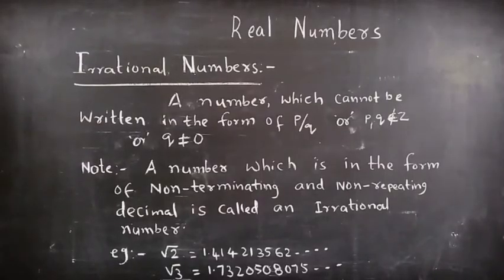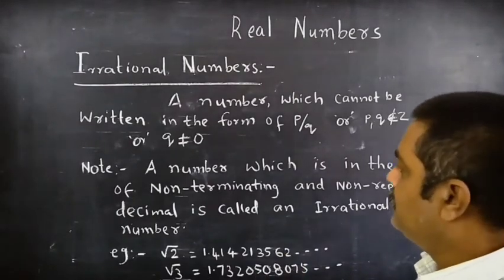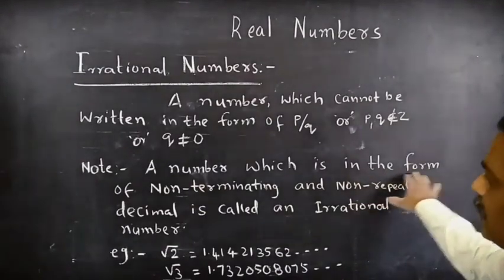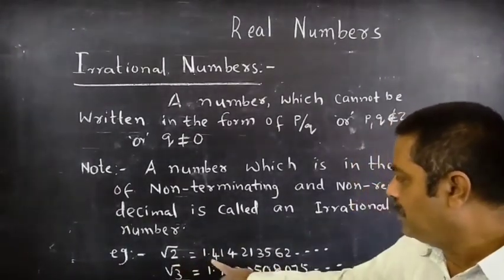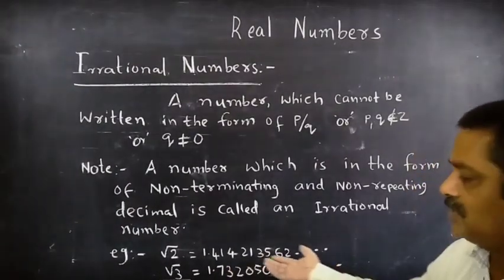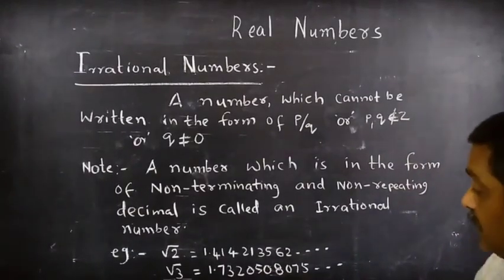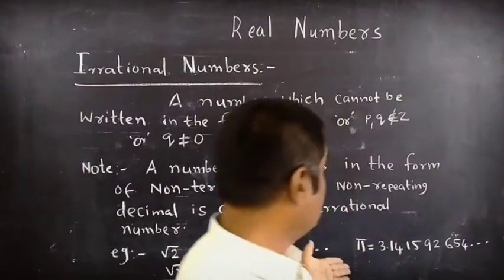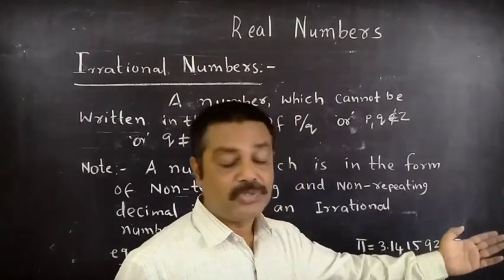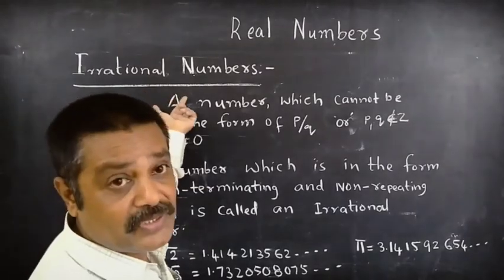Irrational numbers: a number which cannot be written in the form P/Q, where P, Q do not belong to Z or Q is not equal to 0. A number which is in the form of non-terminating and non-repeating decimal is called an irrational number. For example, √2 = 1.414213562..., which is non-repeating. √3 = 1.7320508075..., also no repeating pattern. π = 3.141592654..., also non-repeating and non-recurring. So these numbers are all treated as irrational numbers.